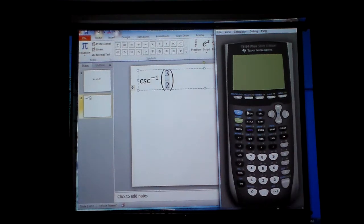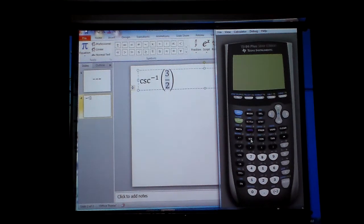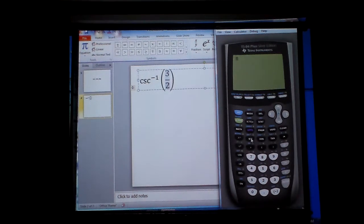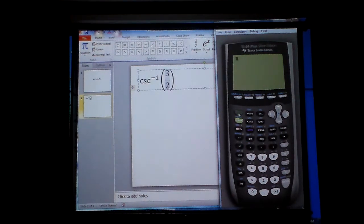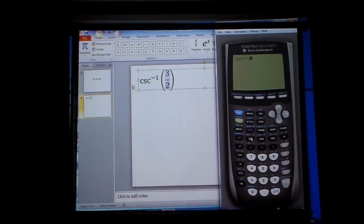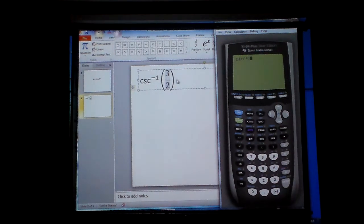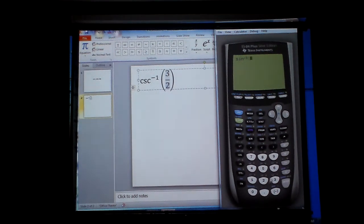Second mode. What I'm going to do is this: What's the reciprocal of cosecant? It is sine. So I'm going to hit second sine. But I'm not going to put in 3 over 2. I'm going to put in...